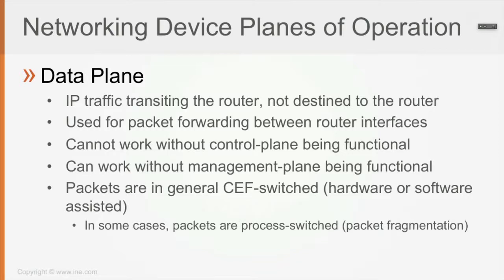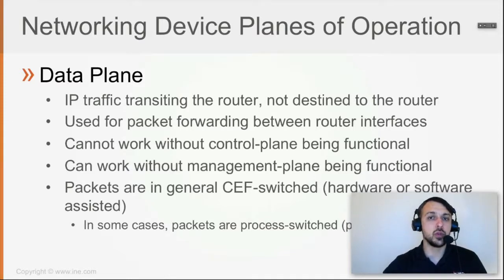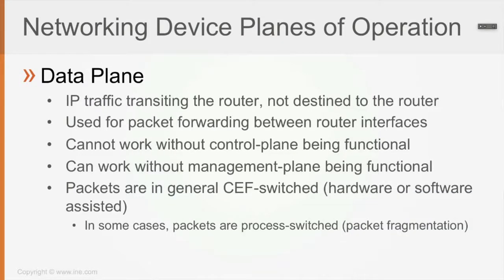The data plane's final goal is packet forwarding between router interfaces — routing packets back and forth for a router, switching packets for a switch, or forwarding packets as allowed by security policies for a firewall (whether at Layer 2 or Layer 3). Data plane cannot work without the control plane being functional, but it can work without the management plane being functional.